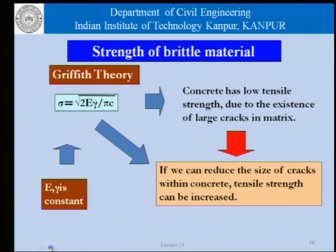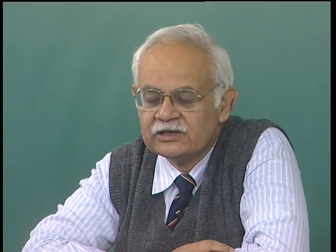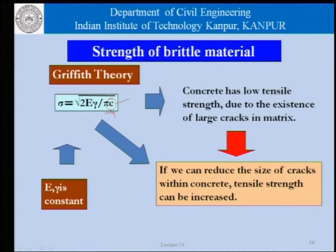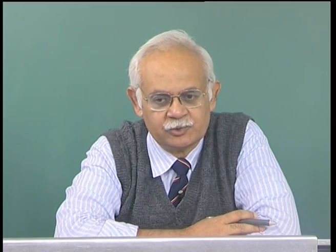A small introduction to the theory of strength of brittle materials: Griffith's theory tells us that tensile strength is related to the size of defects present within the material — C — and constants E and gamma. Concrete has low tensile strength due to a large number of cracks in the matrix; the defects in concrete are many and large. If we can reduce the size of cracks the tensile strength can be increased; if not, we try to bridge the cracks — and that is the approach adopted in fiber reinforced concrete design.